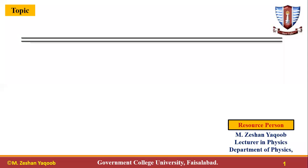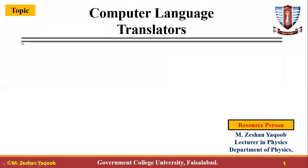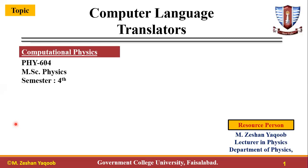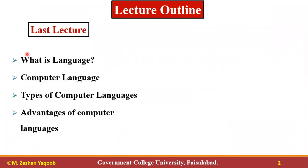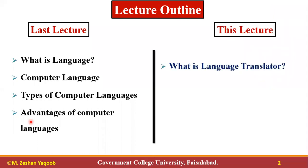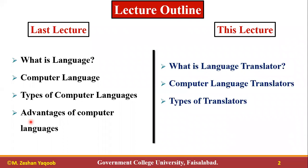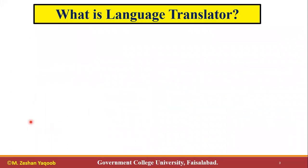Today we are going to discuss our next lecture related to computer language translators. Our course is Computational Physics PHY 604, Massive Physics 4th semester, Spring 2021. In the last lecture we discussed what a language is, its importance, types of computer languages, and advantages of computer languages. In this lecture we are going to study what a language translator is, why we need them, what the possible types of translators are, and how we can use them.